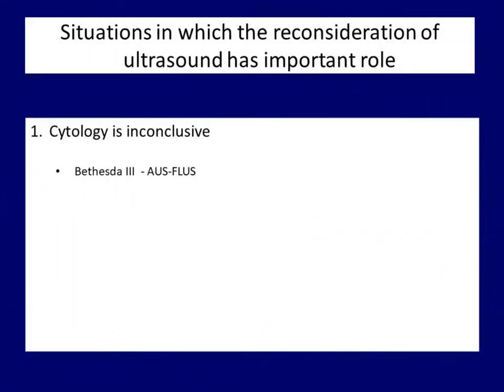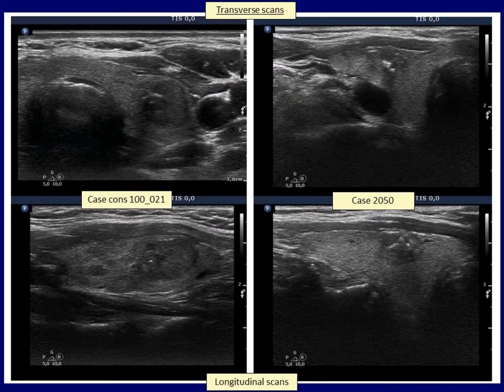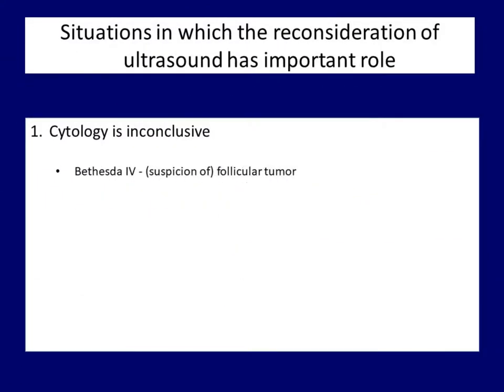The second inconclusive type of cytological result is the Bethesda III category — the atypia or follicular lesion of undetermined significance. I present here again two opposite examples. The risk of malignancy in the left case is average or at most a bit higher than average. In contrast, the right nodule is very suspicious, mainly because of the very irregular lobulated margins and the multiple micro-calcifications.